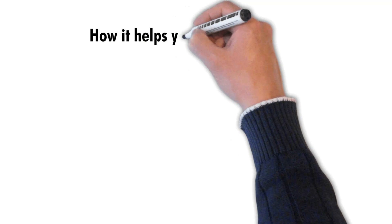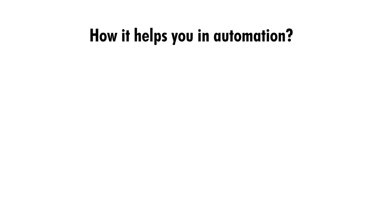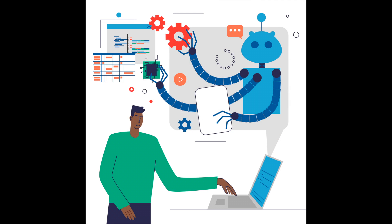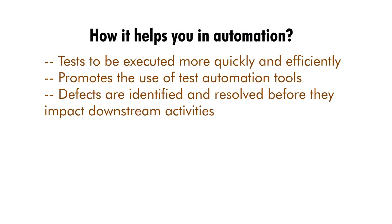Automated testing is an essential part of shift left testing because it allows tests to be executed more quickly and efficiently than manual testing. Automated tests can be run repeatedly and consistently, which ensures that defects can be identified and resolved before they impact downstream activities. This improves the overall efficiency of testing and reduces the risk of defects being introduced into your software.